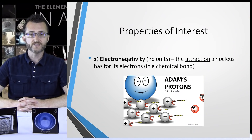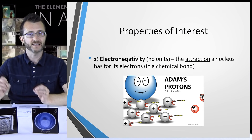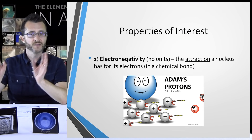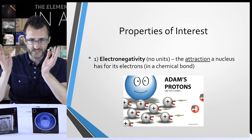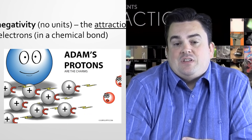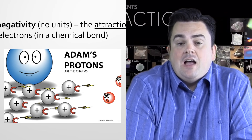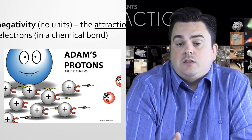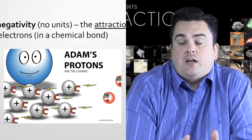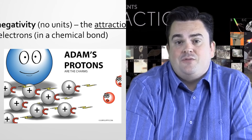Number one: electronegativity, which has no units — the attraction a nucleus has for its electrons in a chemical bond. We'll deal with the chemical bond stuff later, but that is part of its official definition. Remember that opposites attract. We've got positive protons attracting those negative electrons, and that's really the basis for what electronegativity is.